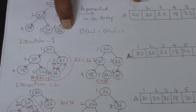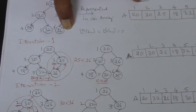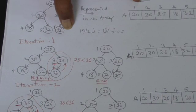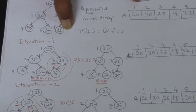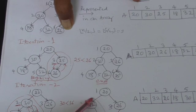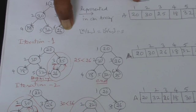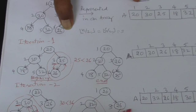So one of the children, the greatest child, is 32. 32 is compared with its parent. So 32 is bigger than its parent, therefore it is swapped. Now this is also arranged in the max heap. This is already done.